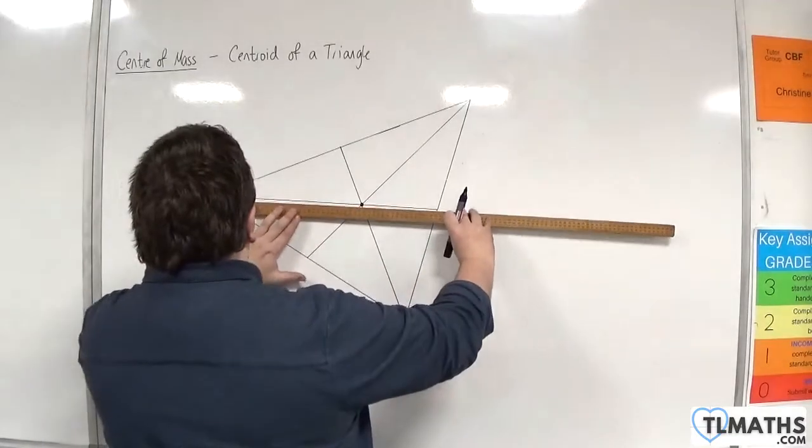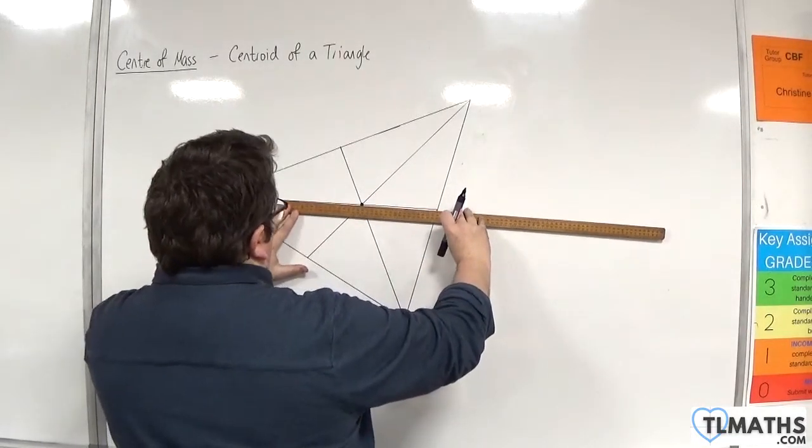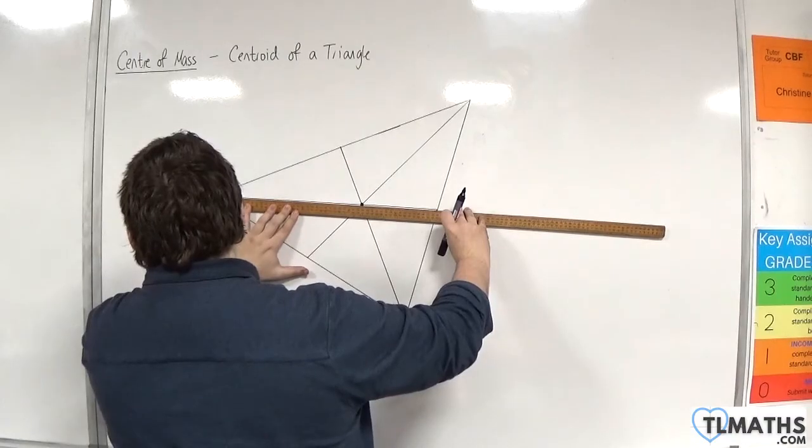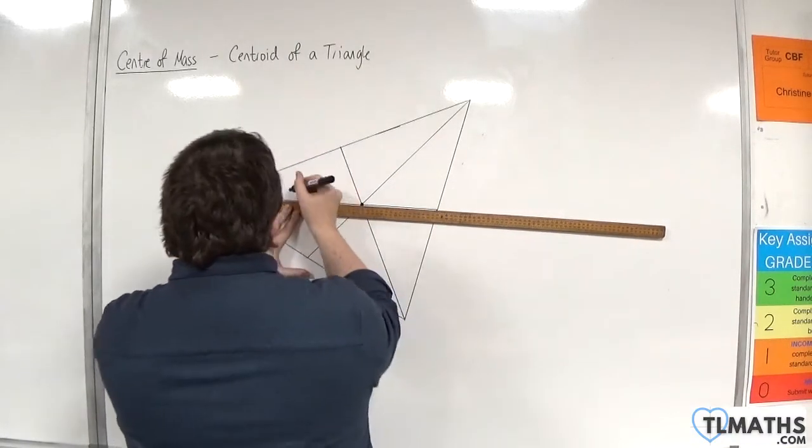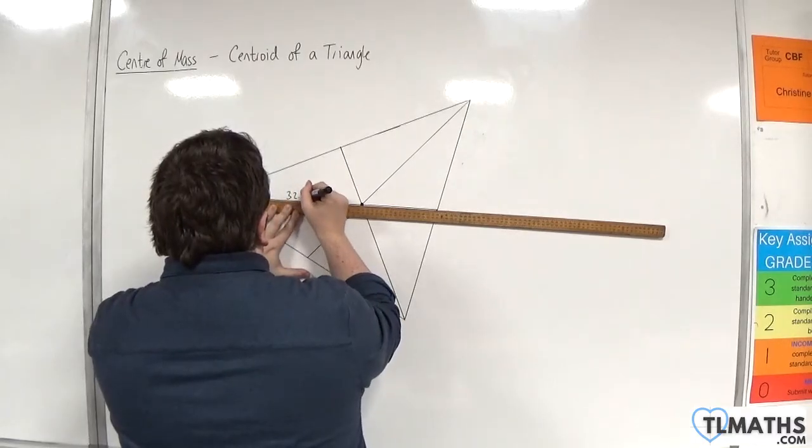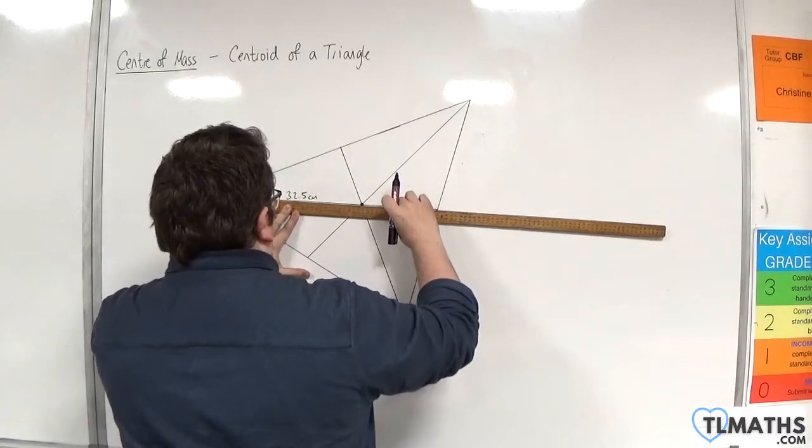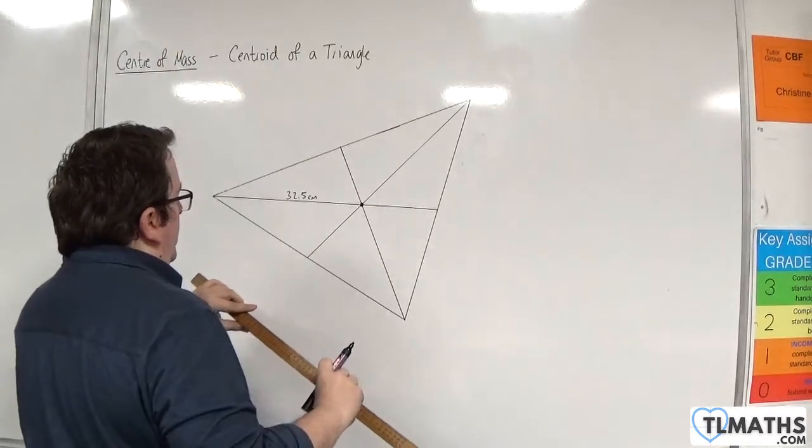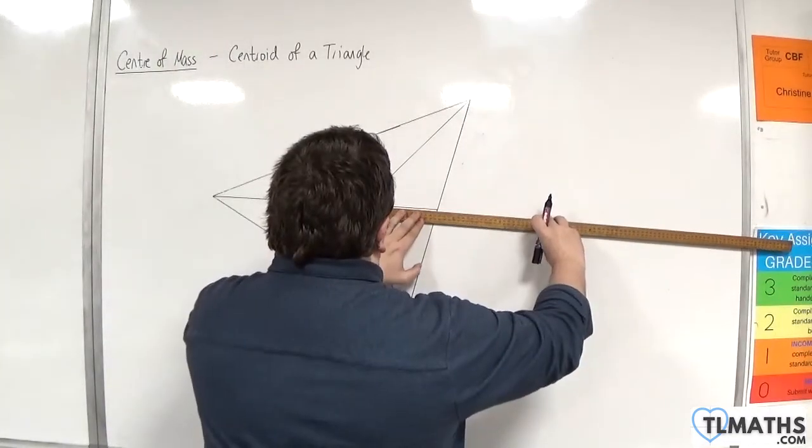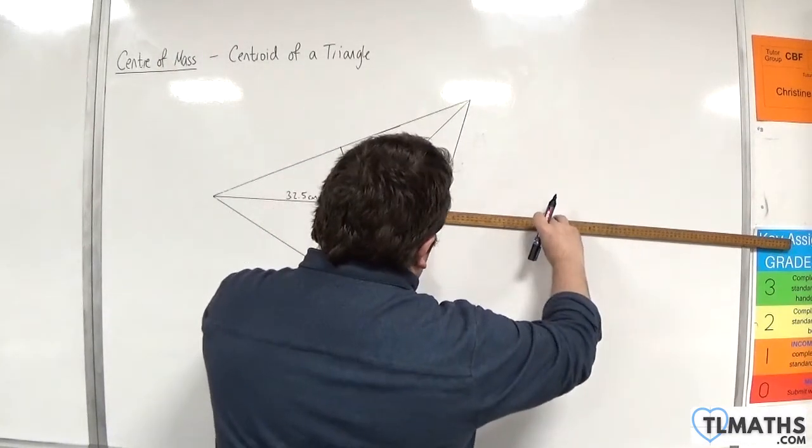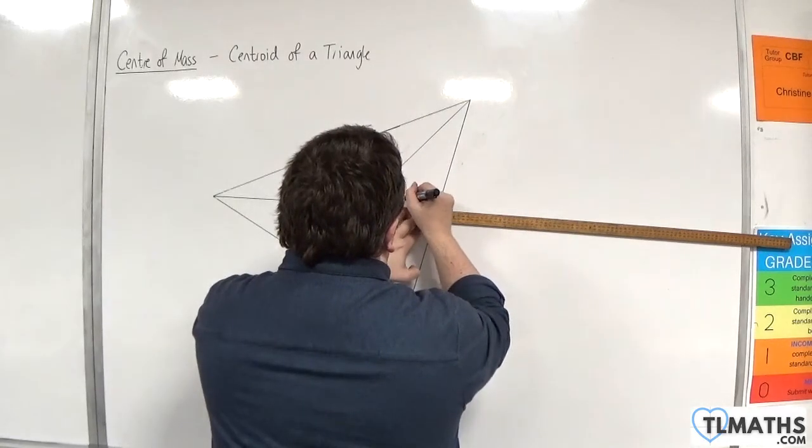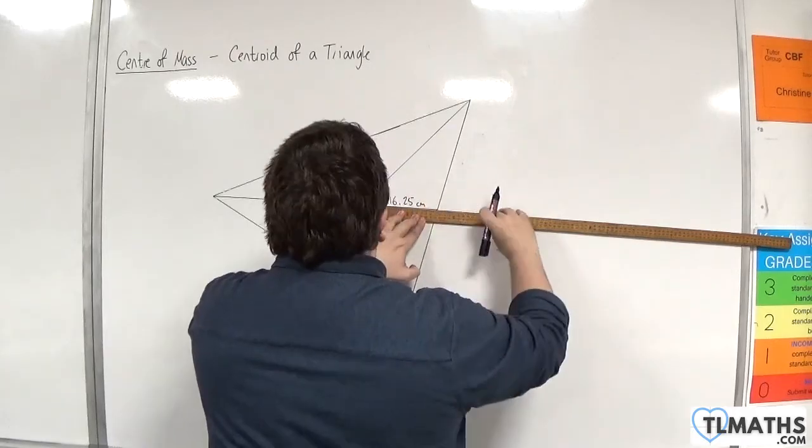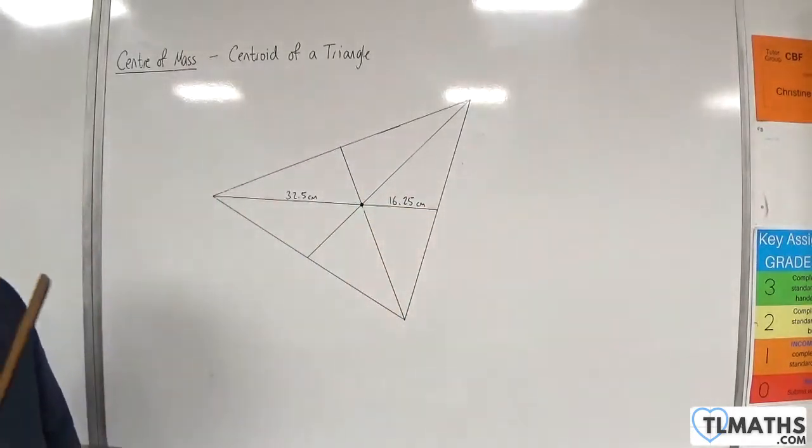So if I measure each of my pieces, now this is going to be tricky, but this is 30, it's about 32 and a half centimeters, that bit. And this bit is about 16 and a quarter. So 32.5 and 16.25.